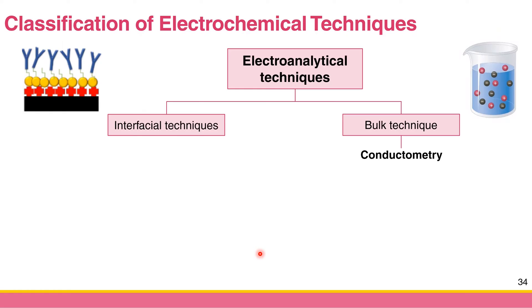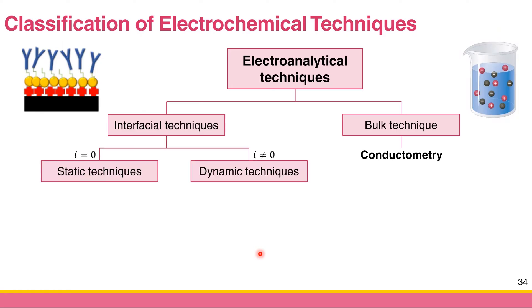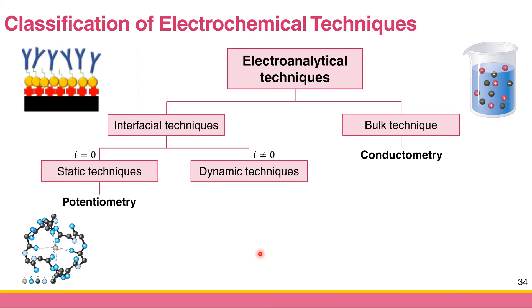For the interfacial technique, we can further classify it into two classes: static techniques and dynamic techniques. The static technique is the interfacial technique that doesn't have a redox reaction — basically, no current flows in the static technique. The only static technique we are interested in here is potentiometry, which we will learn today.